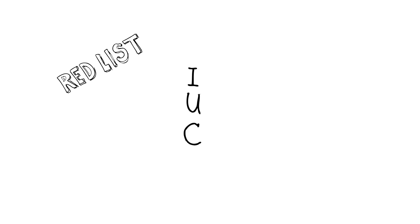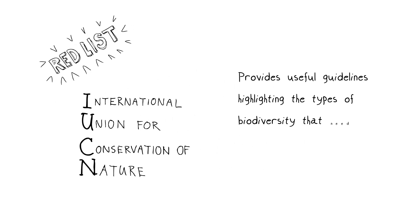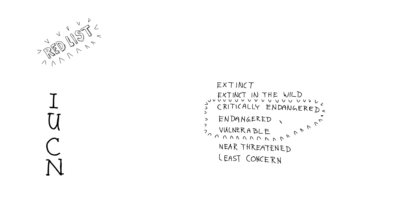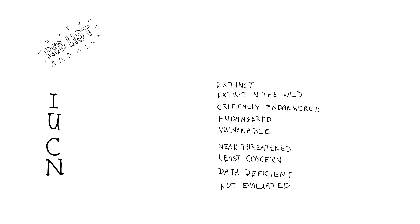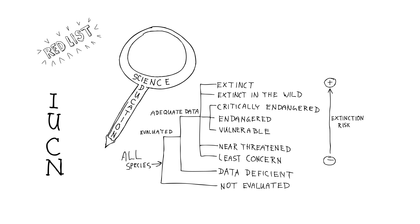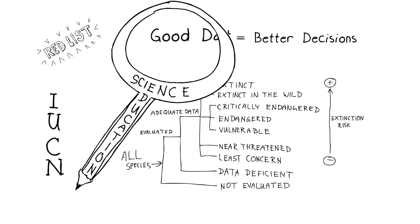Another really useful conservation tool is the Red List of the International Union for Conservation of Nature, the IUCN, which provides useful guidelines highlighting the types of biodiversity or the species themselves that need to be protected the most. All species are placed in one of seven IUCN categories ranging from extinct to least concern. Placing a species into these categories requires adequate data, which underscores the importance of biodiversity research and the dissemination of findings — and that's what I always mean about biodiversity research and its symbiotic partner, education. Good data equal better decisions.